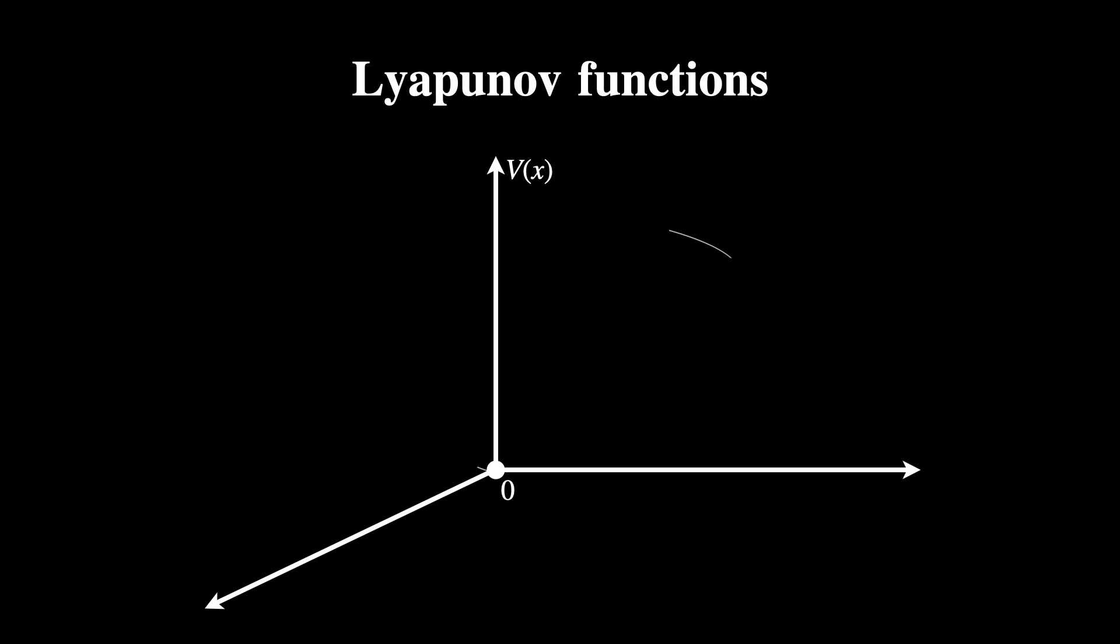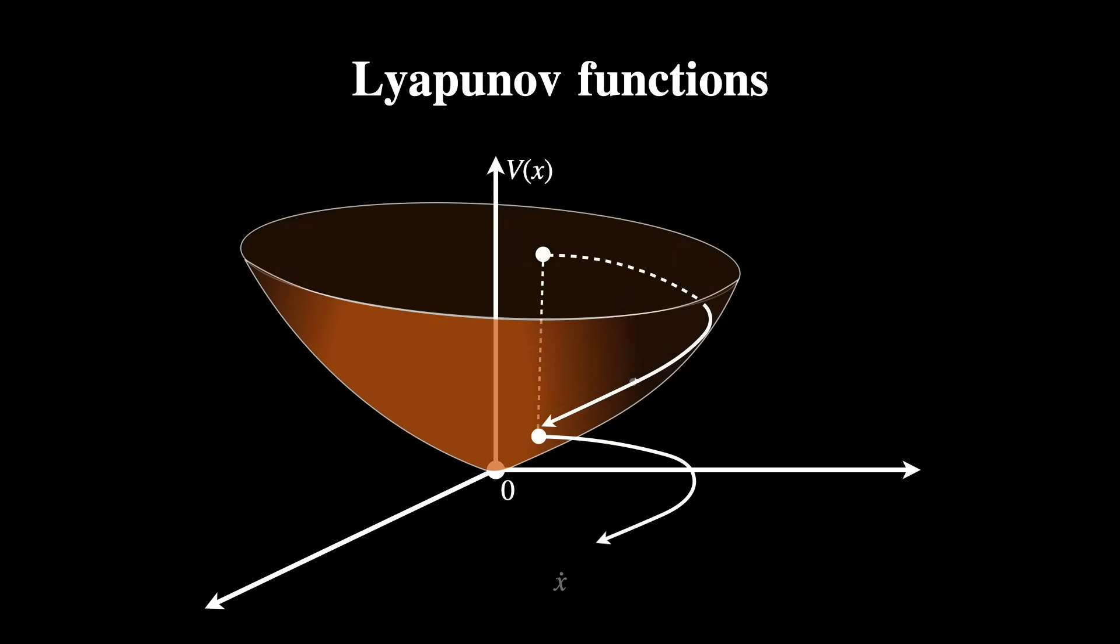Another important insight you can get from qualitative analysis is stability, so how sensitive a system is to small changes in its initial state. A common method is by approximating non-linear systems near equilibrium points by a linear version of it, called linearization. Another method is the usage of Lyapunov functions, which are scalar functions that help us assess the stability of equilibrium in dynamical systems without solving it explicitly.